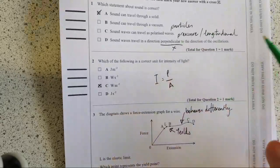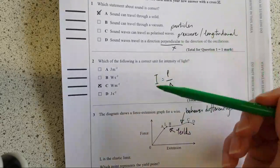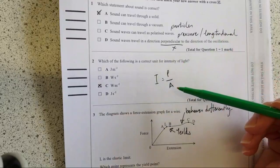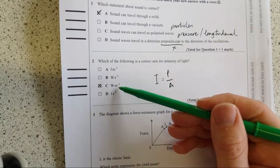Next one. What is the following correct unit for the intensity of light? Intensity is defined as a power over an area so it's this one, watts per metre squared. Moving on.